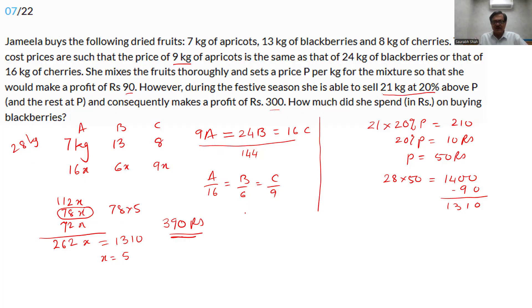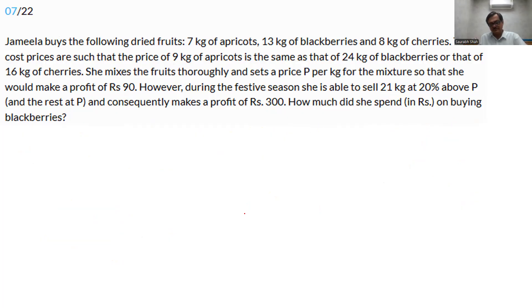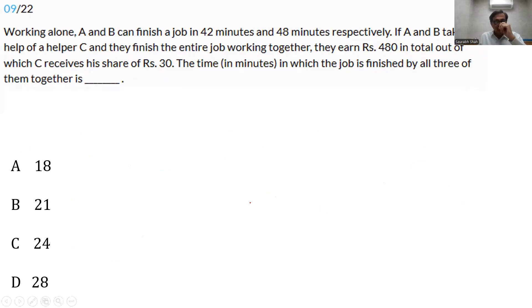A wonderful way to solve this question. Understand the question. So 30 rupees is earned by C out of the total of 480 rupees. 1 by 16th of the money goes to C. So 1 by 16th of the work is done by C. Which means A and B have together done 15 by 16th of the work.